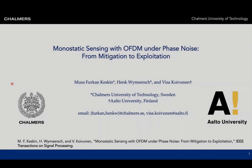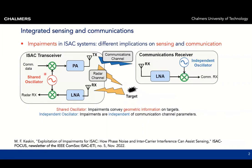This is a short presentation of the paper 'Monostatic Sensing: OFDM Under Phase Noise from Mitigation to Exploitation.' This paper deals with integrated sensing and communication (ISAC) systems. The ISAC transceiver sends a communication signal to a communication receiver, and this signal is also backscattered by targets in the environment and received by the radar receiver, which shares an oscillator with the communication transmitter.